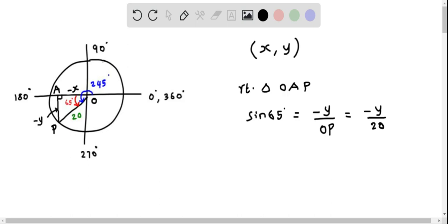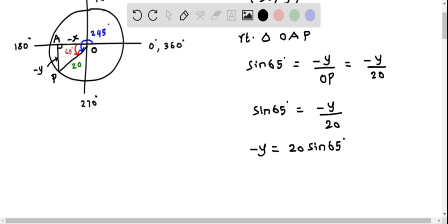Now let us solve for Y from this equation. We have sine of 65 degrees equals negative Y over 20. We multiply both sides by 20, so we get negative Y equals 20 times sine of 65. Therefore we divide both sides by negative 1, which gives us Y equals negative 20 times sine of 65 degrees.